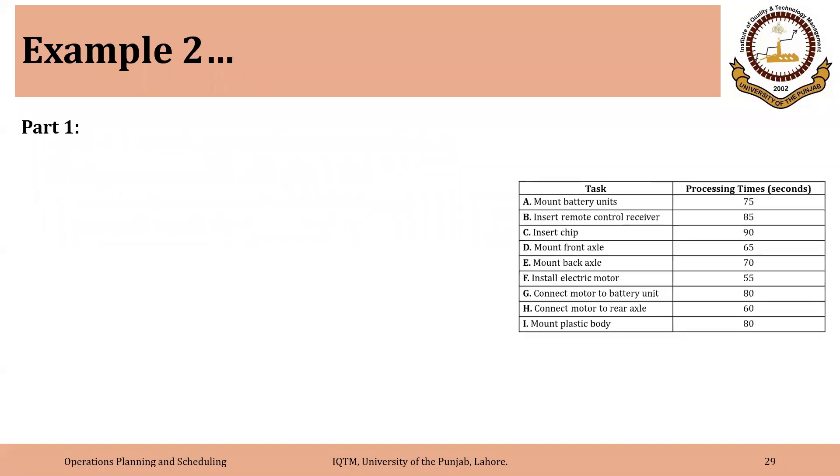So first we need to find the takt time. So that is the production time per day in this case divided by demand per day. So you have to keep the time element same. If you are talking in terms of daily time, so you have to take daily demand. If it is say weekly time as was in the case of example one, then it should be weekly. So 2.4 minutes or 144 seconds.